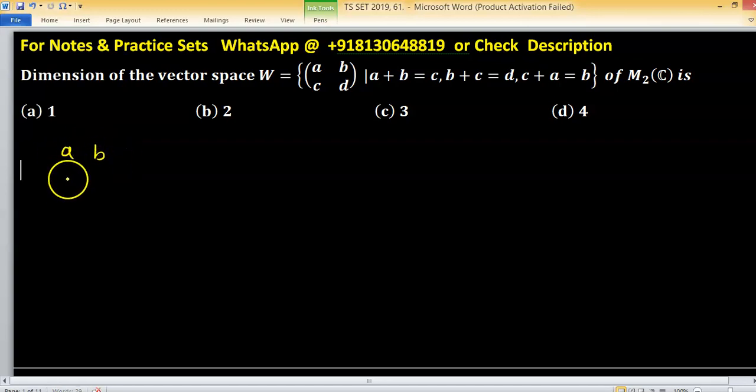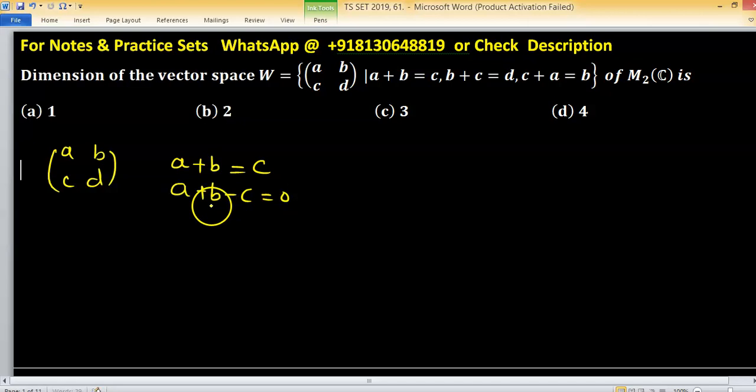So let's consider ABCD is a random element of W, and constituents of this matrix satisfying the property A plus B equals to C, or you can write A plus B minus C equals to zero. Second condition: B plus C minus D equals to zero. A plus C minus B equals to zero.